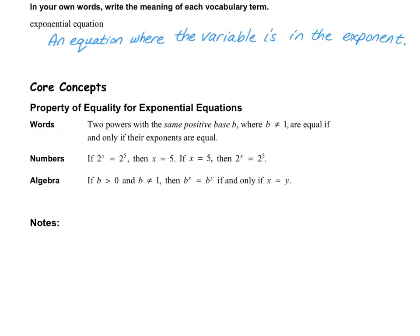An exponential equation is an equation where the variable is in the exponent. A simple exponential equation would be like 2 to the power of x equals 2 to the power of 5. So what happens is that if we have the bases the same, that means that the exponents are going to equal each other. So since the bases are the same here, we can say that x is equal to 5.